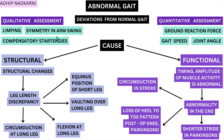Qualitative observations include limping, symmetry in arm swing — how the person swings their right versus left arm — and typical compensatory strategies like Trendelenburg gait, which we will cover in future videos. On the quantitative side, we have exact numbers to describe the gait: for example, the ground reaction force, the gait speed (distance covered per unit time), and the joint angles. These objective data points help us assess the gait as well.